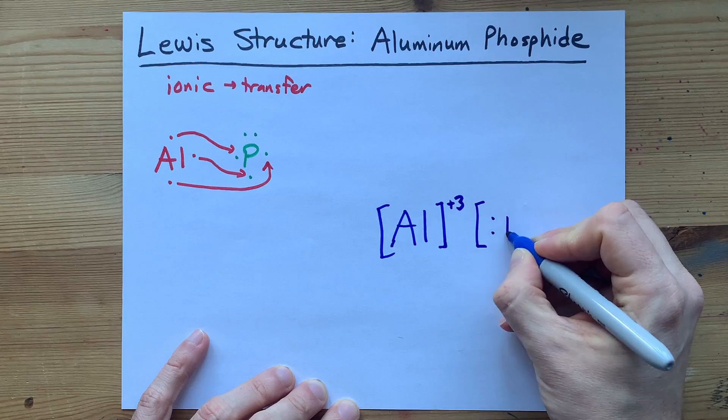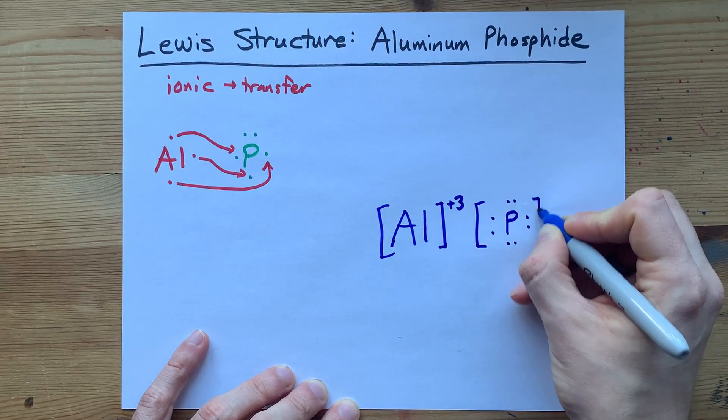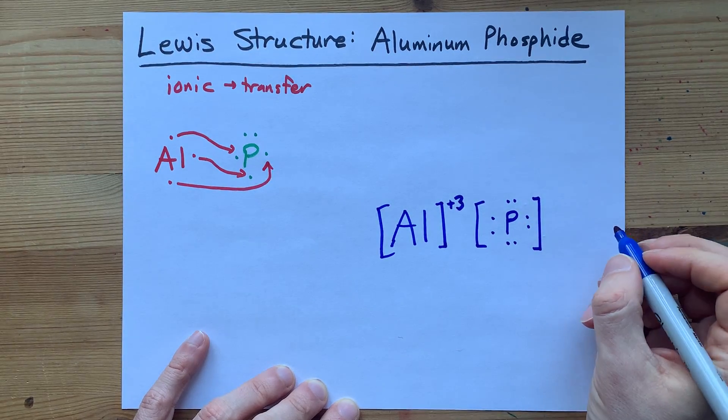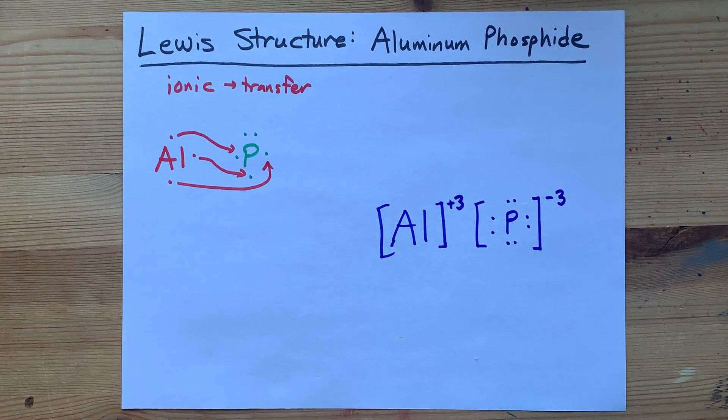Along with one P. Now that P has eight electrons around it because it had five and took three from aluminum. Those three extra electrons give it a charge of minus three.